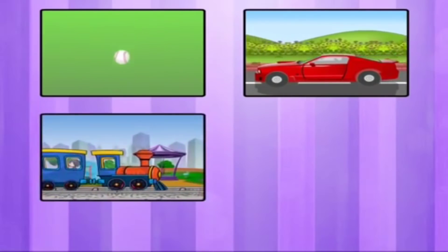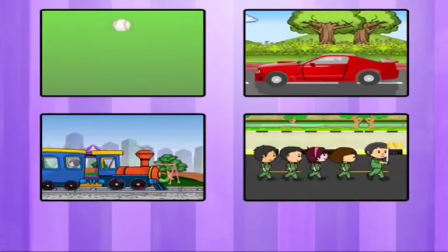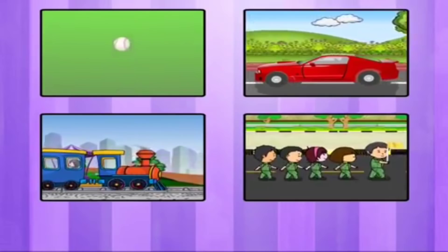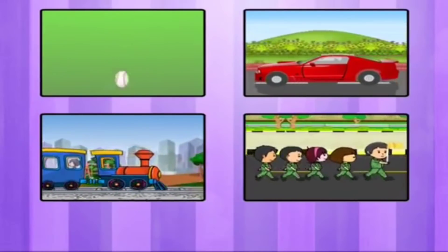Let's see more examples. A ball moving up and down in the air, cars on a road, the toy train on a track, soldiers marching — they all are straight line motion.